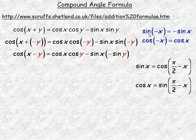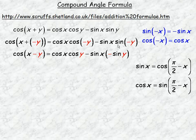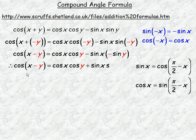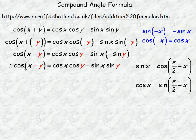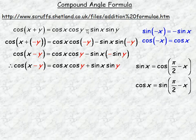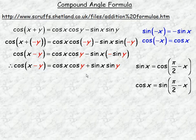That is not the same for the sine. The sine of a negative rotation is the negative of the positive rotation, so sine of negative x equals negative sine x. Substituting negative sine y for sine(negative y), we get cos(x minus y) equals cos x cos y plus sine x sine y. So for cosine, the signs are opposite: cos(x+y) uses minus, and cos(x-y) uses plus.